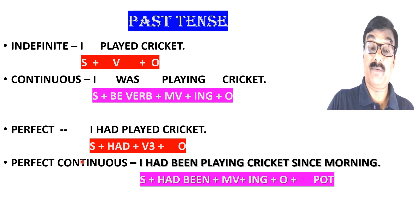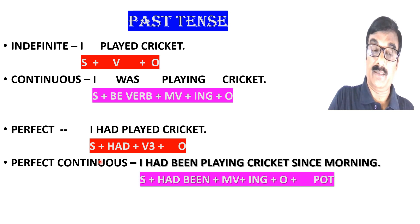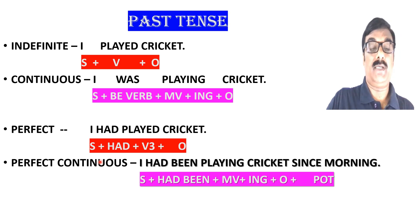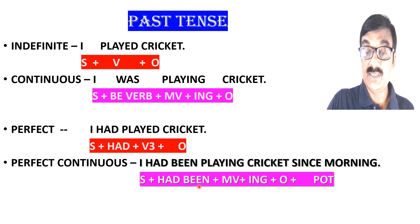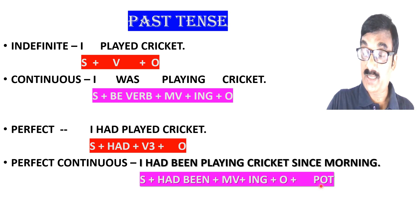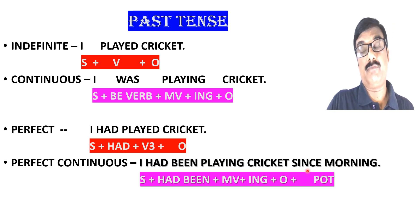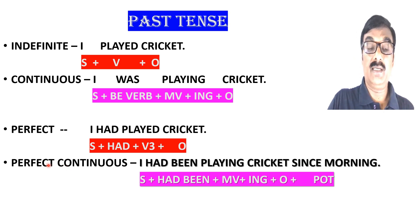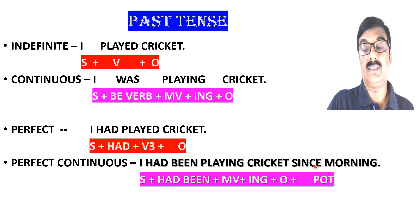Next is past perfect continuous tense. When in the past some action started and continued for a long time, we use past perfect continuous tense. The structure is: Subject + had been + main verb + ing + object + period/point of time. 'Since' is used for point of time and 'for' for period of time. Example: 'I had been playing cricket since morning' — this is past perfect continuous tense.